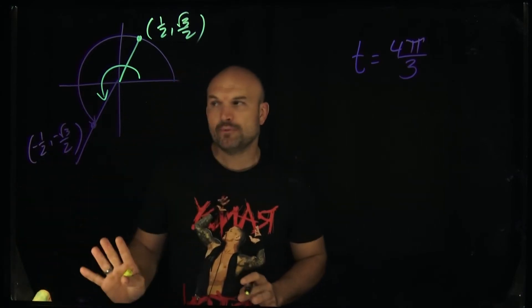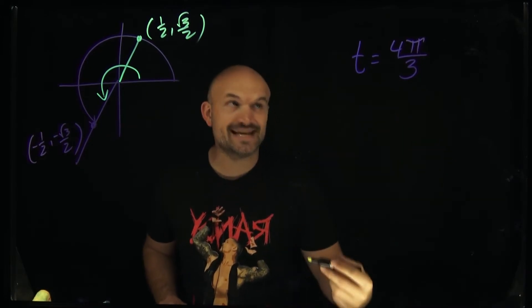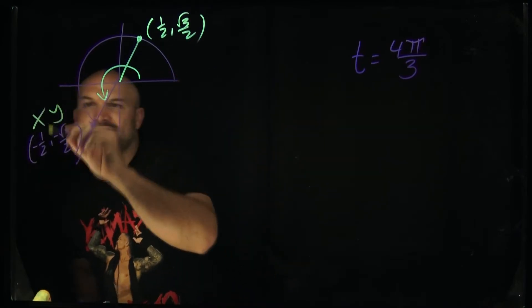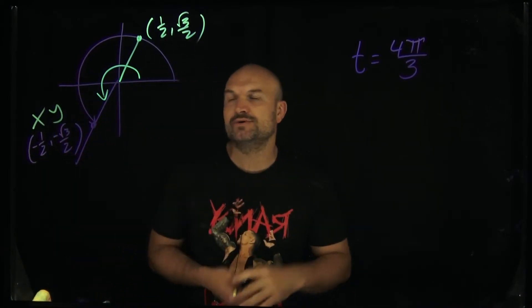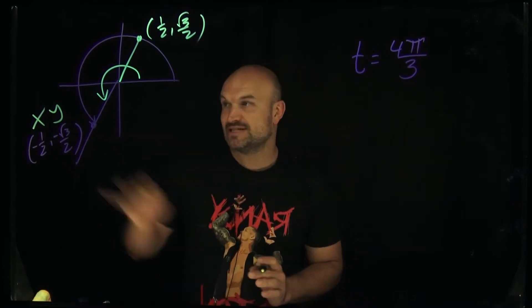Now, that's very important because when we're trying to evaluate for the sine, cosine, tangent, cosecant, secant, and cotangent, we need to know what are the x and y coordinates of our point on the unit circle because that is how we're going to evaluate for our angle at 4π over 3.